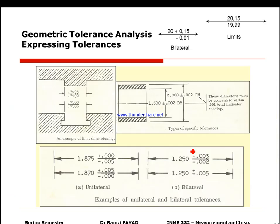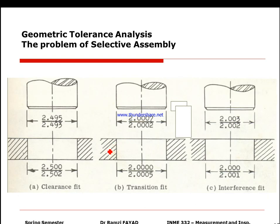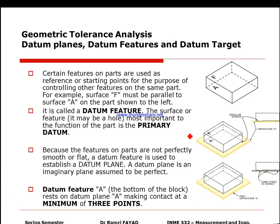Going back to the diagram, we have the basic dimension with the shaft placed relative to the hole, showing maximum material condition, minimum material condition, lower deviation, upper deviation, and the zero line between the hole and shaft variation ranges. For example, a shaft of 2.495 as maximum material condition much less than the hole indicates clearance fit; if stuck between, it's transition; if much bigger, it's interference fit.